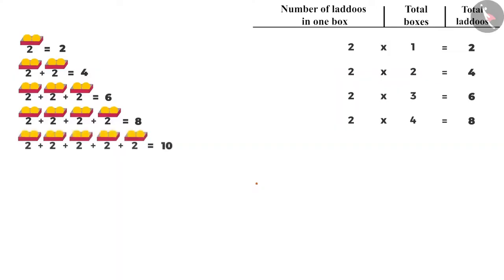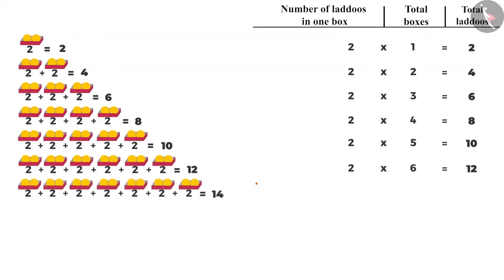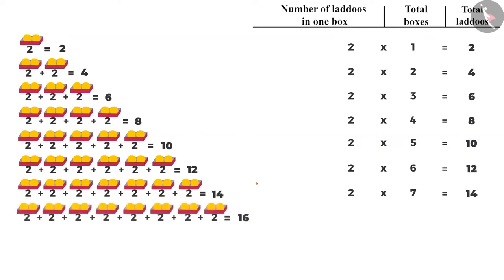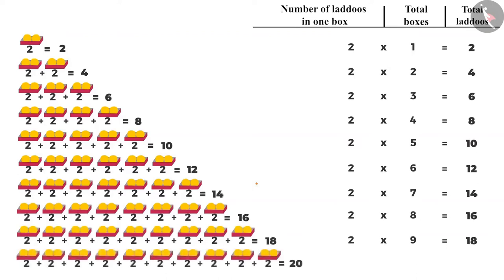To find the ladoos in five boxes, we will multiply two by five. Number of ladoos is two and number of boxes is five, so there will be ten ladoos in five boxes. Number of ladoos in six boxes will be two multiplied by six, that is twelve. Seven boxes: two multiplied by seven is fourteen. Eight boxes: two multiplied by eight is sixteen. Nine boxes: two multiplied by nine is eighteen. And ten boxes: two multiplied by ten is twenty.